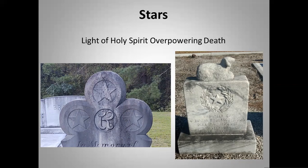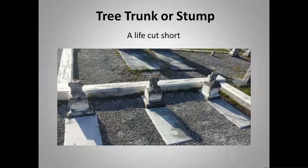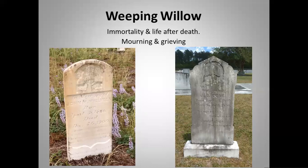Tree trunk or stump headstones represent a life cut short. These three children's graves each have a small tree stump and a lamb on them — the design is pretty much the same on all three, as these were mass produced with individual inscriptions carved in. A weeping willow standing up straight and tall actually means immortality and life after death — this comes from the fact that a branch of a weeping willow can be cut and it will grow a new tree, not dying from being cut. Due to its name, it can also represent mourning and grieving.